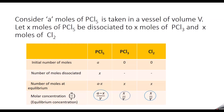Here it is given that A moles of PCl5 is taken in a vessel of volume B. X moles of PCl5 dissociated to form X moles of PCl3 and X moles of Cl2. We tabulate the data in a tabular column for PCl5, PCl3, and Cl2.